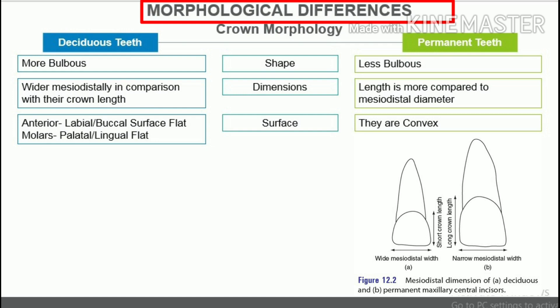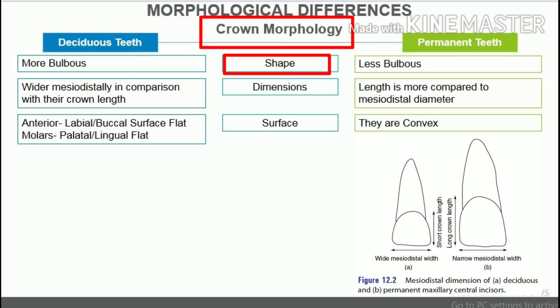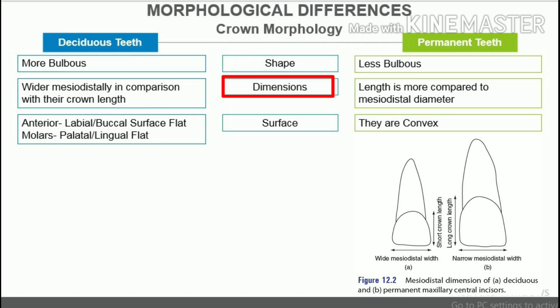Morphological differences — differences in crown morphology. Shape: deciduous teeth are more bulbous; permanent teeth are less bulbous. Dimensions: the crowns of primary teeth are wider mesiodistally in comparison with their crown length. The crown length of permanent teeth is more when compared with their mesiodistal width.